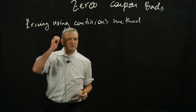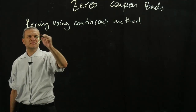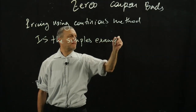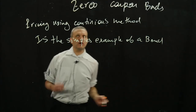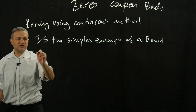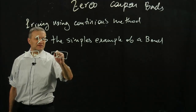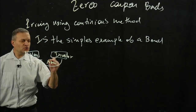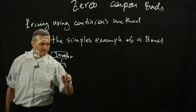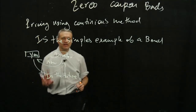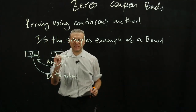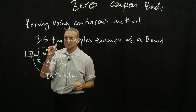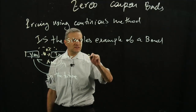Let me recall the setup. We said that zero-coupon bonds is the simplest example of a bond. How it works is that the investor gives you money now, and you're going to pay the investor in the future as a one-time lump sum payment. So say the investor gives you today $0.50, and you're going to give him $1 in five years — a lump sum payment. That's why we call it a zero-coupon bond.